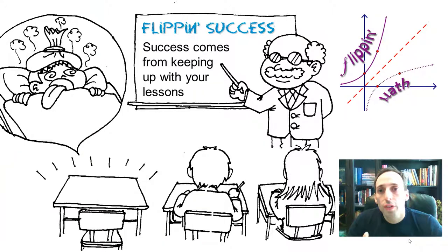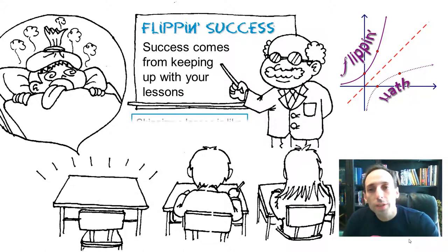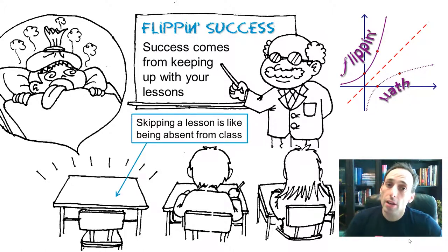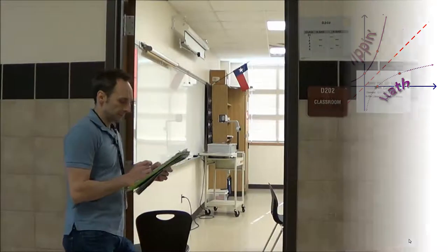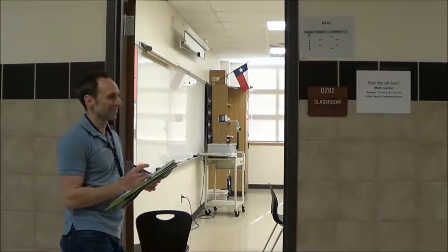Okay, so in order to be successful in this class, in this flipped class, you're going to have to keep up with your lessons. So traditionally, whenever you missed a homework assignment, it wasn't that big of a deal because you could probably just make up that homework assignment. But in a flipped class, if you skip your homework, which is actually watching the video lessons, it's as if you actually were absent from school. And you know how hard it is to catch up when you're absent in an advanced class. You don't want to be like this guy.